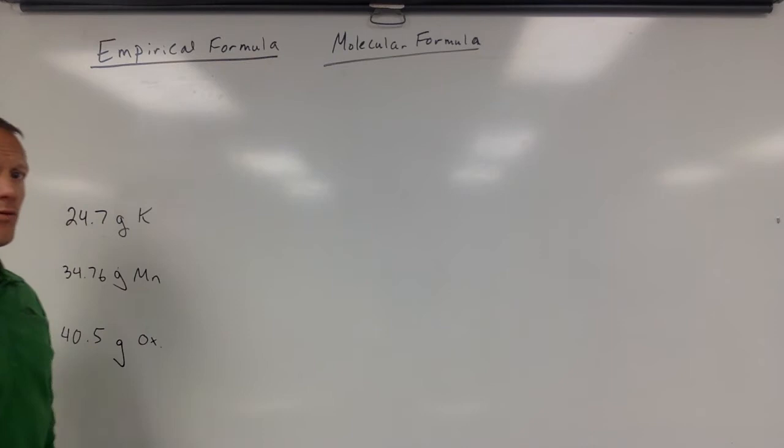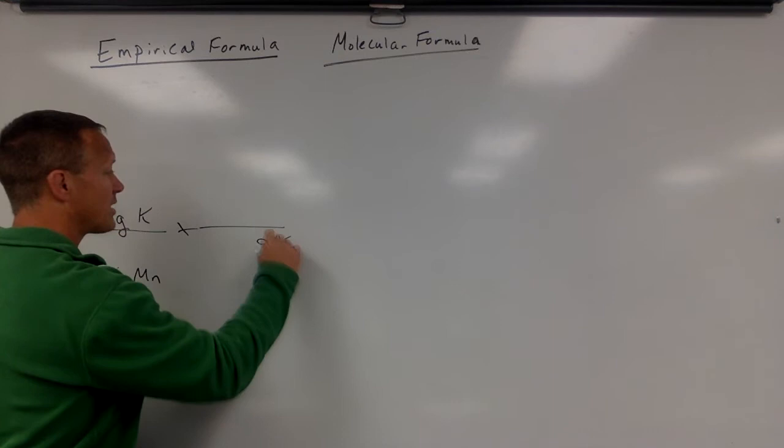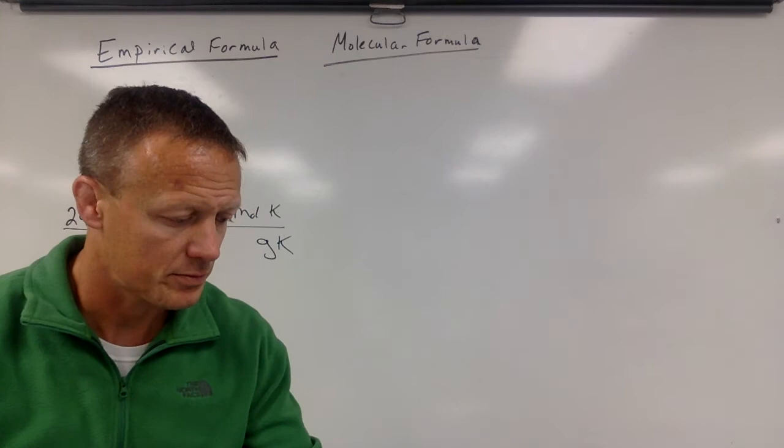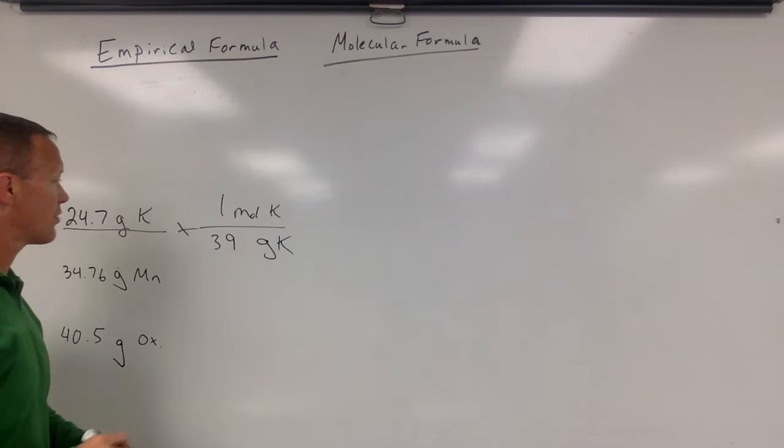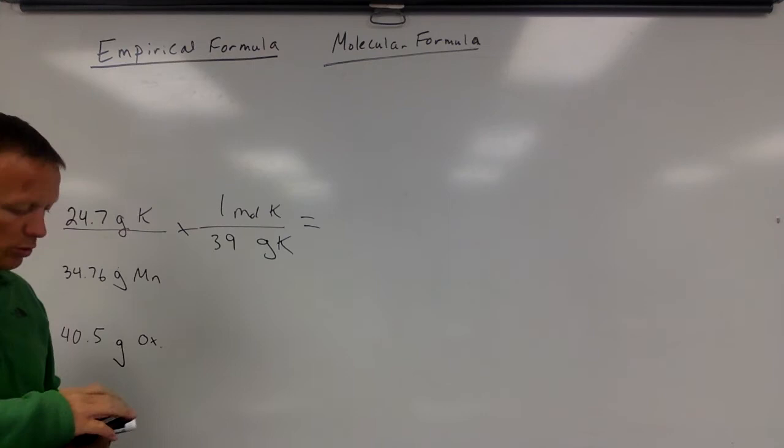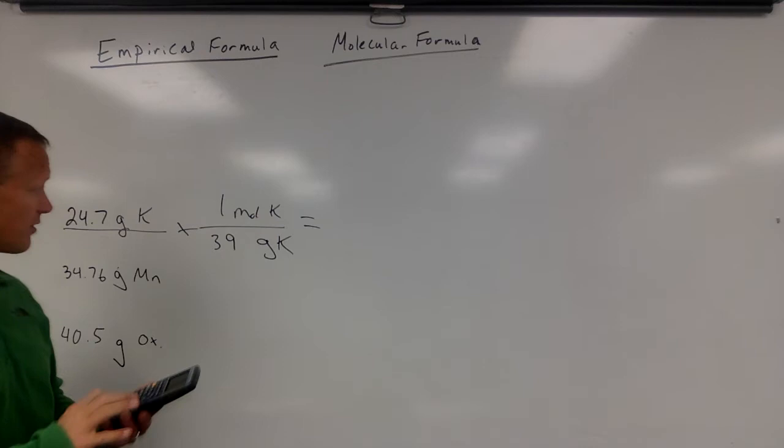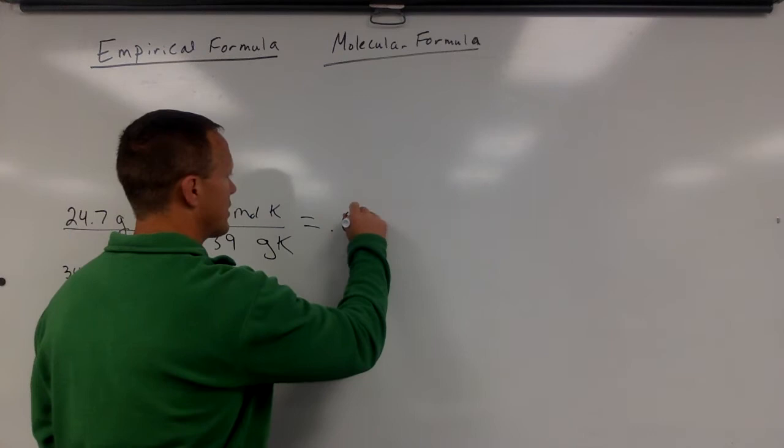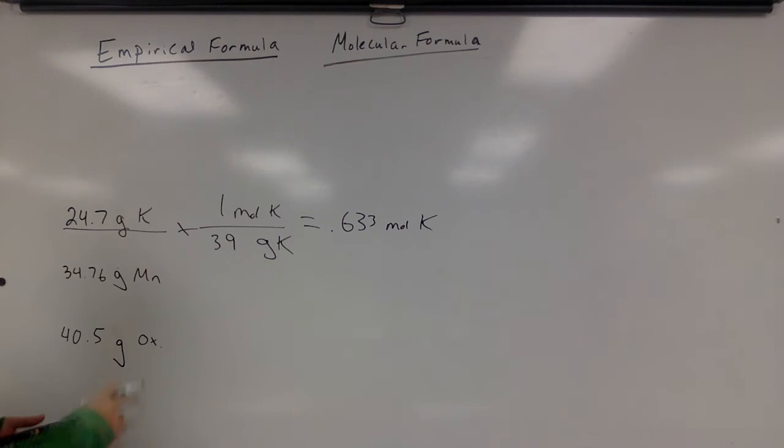What we need to do next is turn those into moles. So I'm going to figure out how many grams of potassium there are per mole of potassium. It's going to be 39 grams of potassium per mole. So we're going to take 24.7 divided by 39.6, so we have that many moles of potassium.